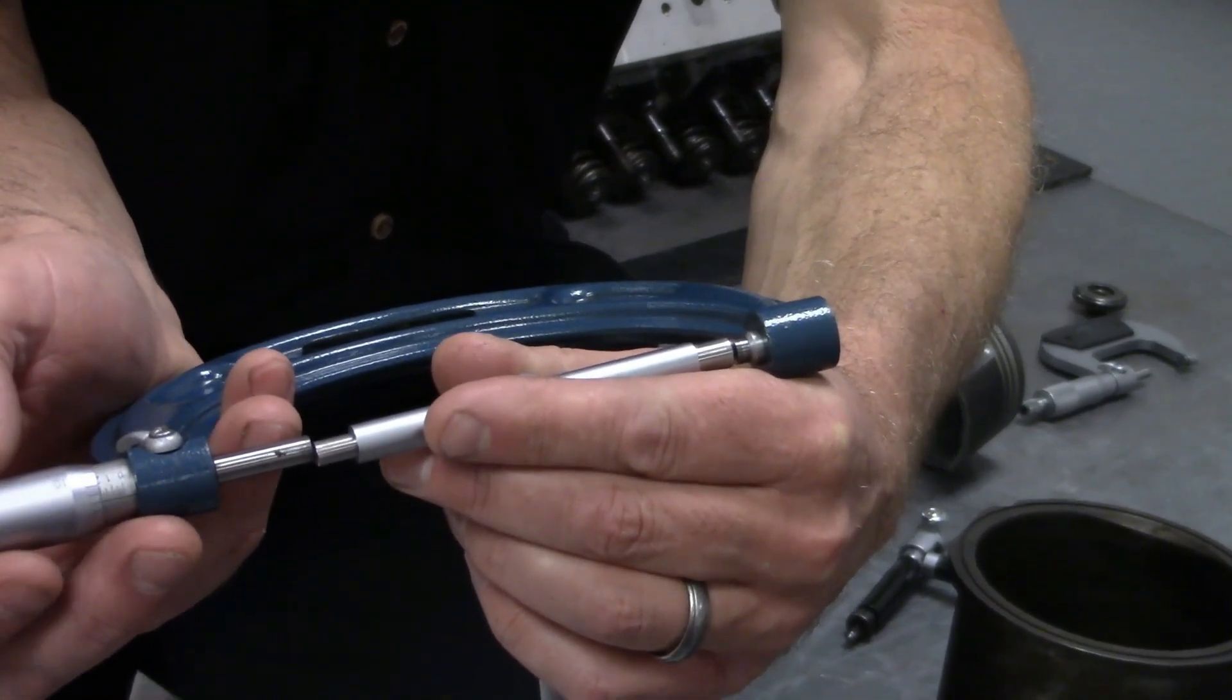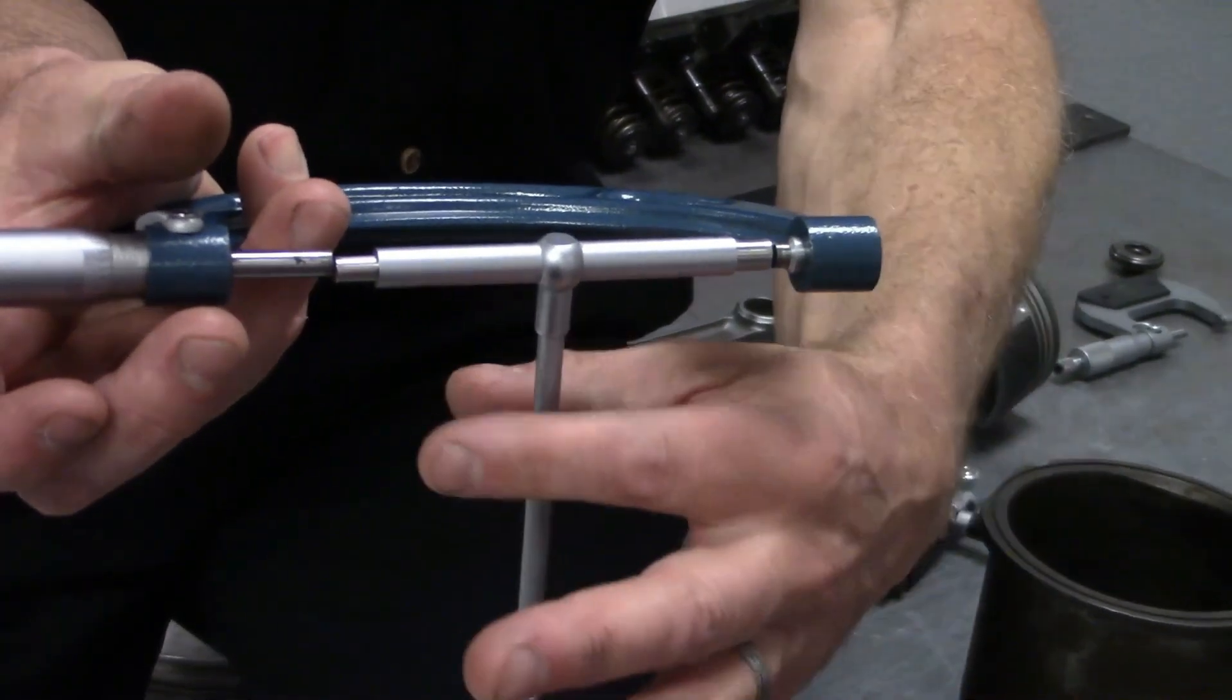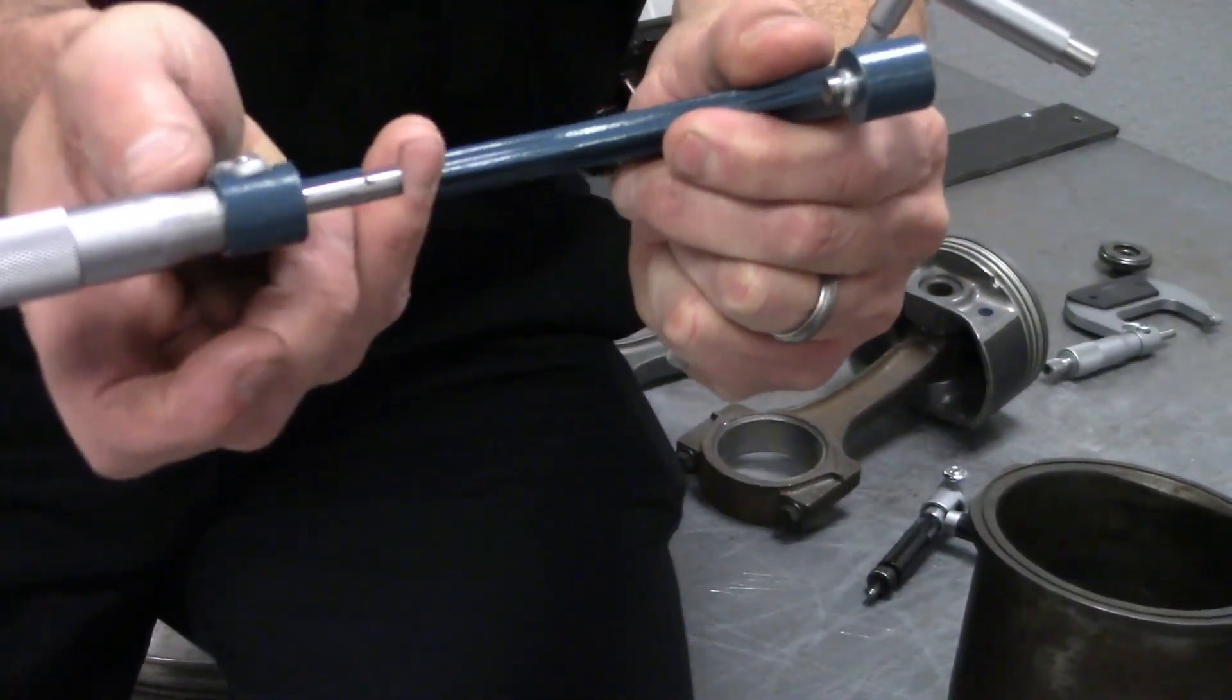We're just going to get that T-gauge in there and touch on it. We're holding it between those two points, and then at that point we're going to lock our mic and we go ahead and take our reading.